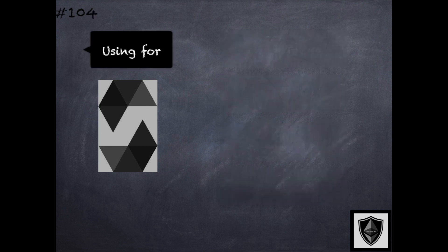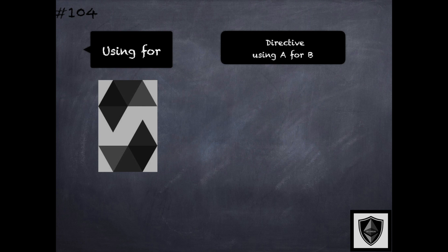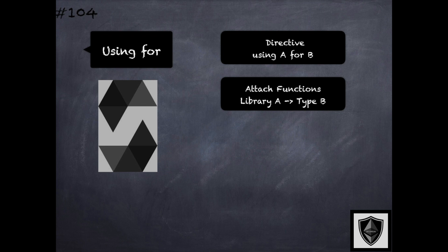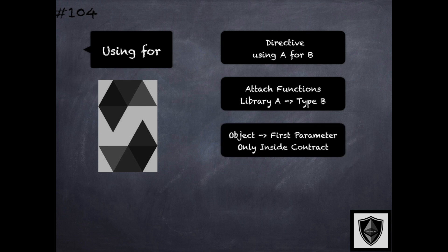Solidity supports the using...for directive. This directive is used for attaching library functions to specific types in the context of a contract. For the directive using A for B, A specifies the library and B specifies a particular type. This means that the library functions in A will receive objects of type B when they are called on such types, and they will receive the object of that type as their first parameter. This directive is applicable only within the current contract, including within all its functions, and has no effect outside of the contract in which it is used.